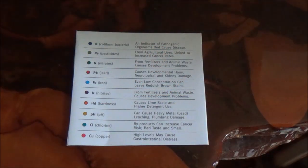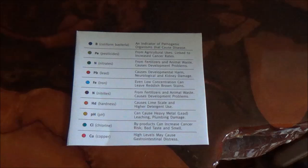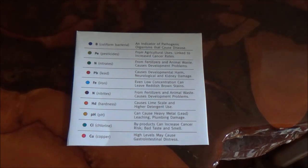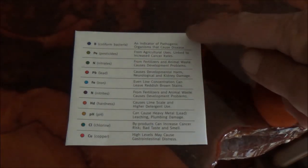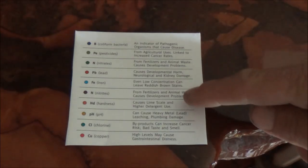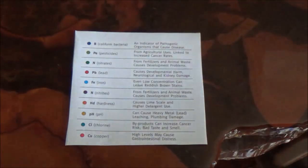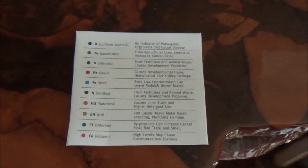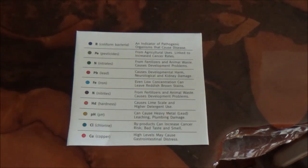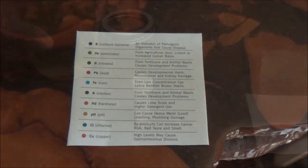This is what this test tests for: coliform bacteria, pesticides, nitrates, lead, iron, nitrites, hardness, pH, chlorine, and copper. With this test kit, it goes right down here and tells the different things that it does to the body and everything like that. So it's an interesting test. I'm mainly interested in the bacteria, but we'll go through and test all of these.